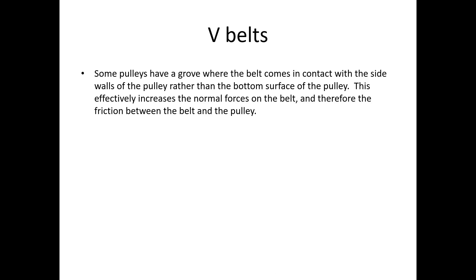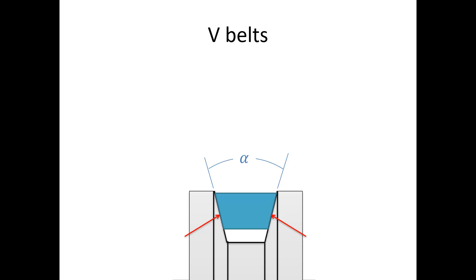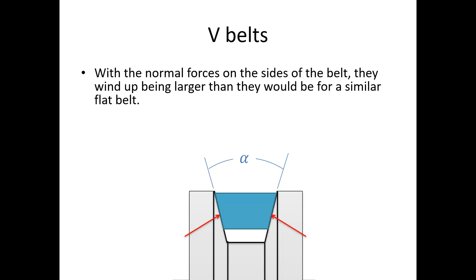Complicating this, we frequently use V-belts in modern machinery. Some pulleys have a groove where the belt comes in contact with the side walls rather than the bottom surface. This effectively increases the normal forces on the belt, therefore increases the potential friction forces. A flat belt contacts the bottom surface. A V-belt has a groove where the belt fits snugly. With the normal forces on the side of the belt, they're larger than for a similar flat belt. Larger normal forces mean larger friction forces.